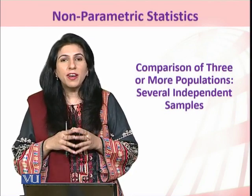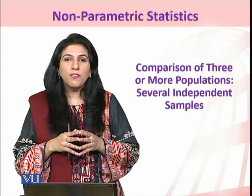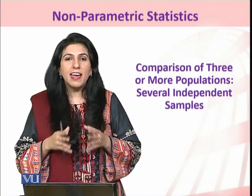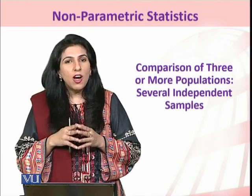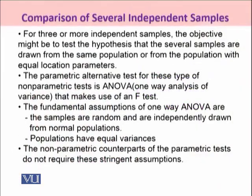In that case, we can make use of non-parametric alternatives to compare three or more populations. For three or more independent samples, the objective is to test the hypothesis that the several samples are drawn from the same population, or from populations with equal location parameters — that is, we are interested in testing the equality of several location parameters.